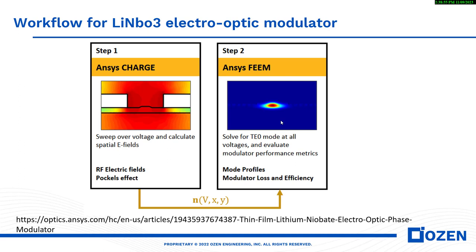This is the workflow of lithium niobate electro-optic modulator. First, you need to work with ANSYS Charge. ANSYS Charge is part of ANSYS multiphysics or numerical multiphysics. In this case, you will sweep the voltage and calculate the spatial E fields. After this calculation, you can calculate the Pockels effect. By the Pockels effect, you can calculate the perturbed index.